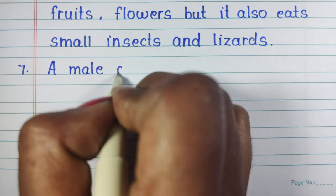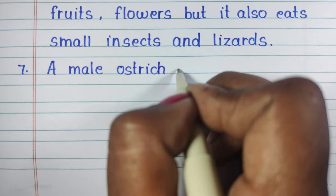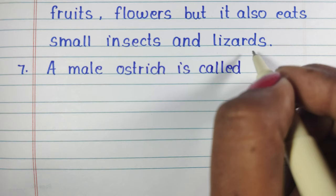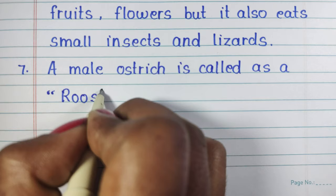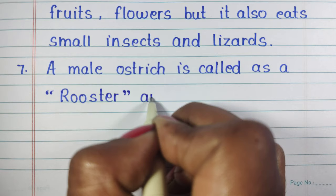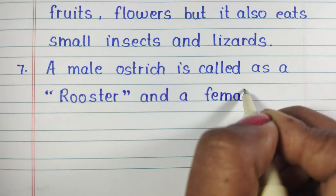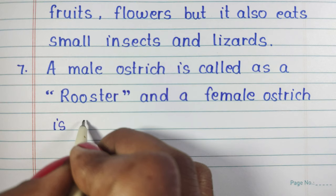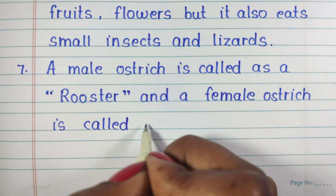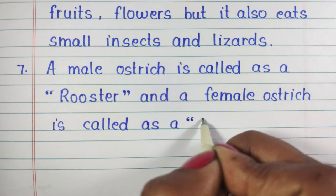Seventh line: A male ostrich is called a rooster, and a female ostrich is called a hen.